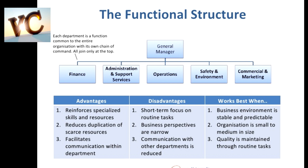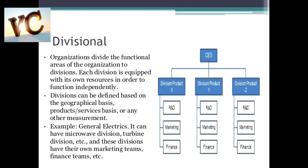Now divisional structure — jaise ki maine bataya isme alag-alag divisions hote hain, alag-alag products ke departments hote hain: textile department, cosmetic department, medicine department, soap department, and whatsoever. Jo divisional structure hota hai woh basically aise organizations use karte hain jo more than one type of products banaate hain, jinka main focus sirf ek product pe nahi hota, multiple products pe hota hai.